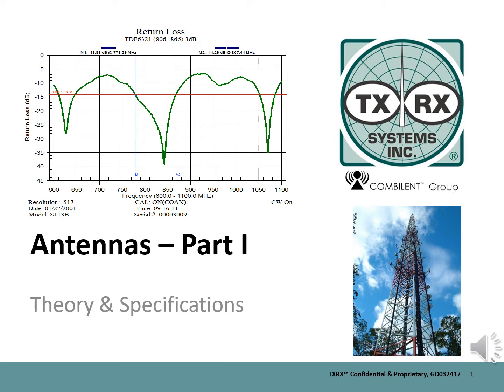Of the many things that impact a system's coverage, the selection, installation, and characteristics of the antenna will be one of the most important. In the simplest form, an antenna is a piece of wire stuck in the air or strung between two trees. The important part of antennas is knowing how long to make the wire and how it should be hung.